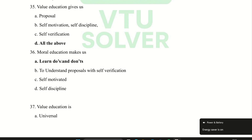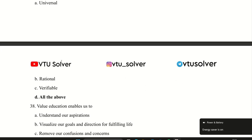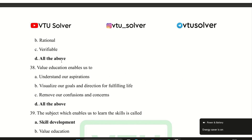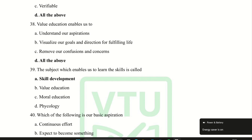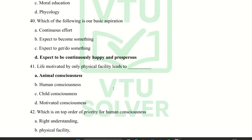Value education is all of the above. Value education enables us to all of the above. The subject which enables us to learn a skill is called skill development. Which of the following is our basic aspiration? Except to be continuously happy and prosperous. Life motivated by only physical facility leads to animal consequences.